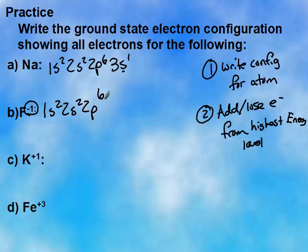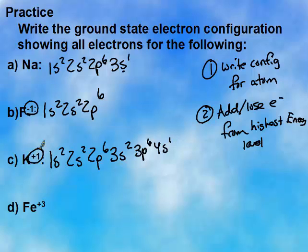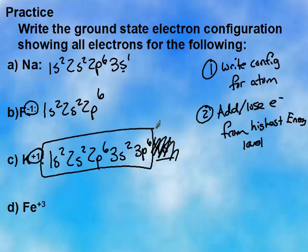Go ahead and try K plus 1 on your own. So this is the electron configuration for potassium atom. 1s2, 2s2, 2p6, 3s2, 3p6, 4s1. But it's a positive ion, which means I need to remove an electron. This is my highest energy, and so this one goes away. So that is the electron configuration for potassium ion.